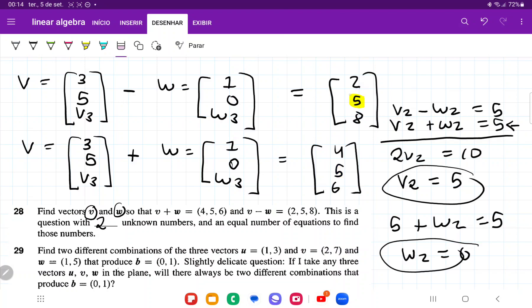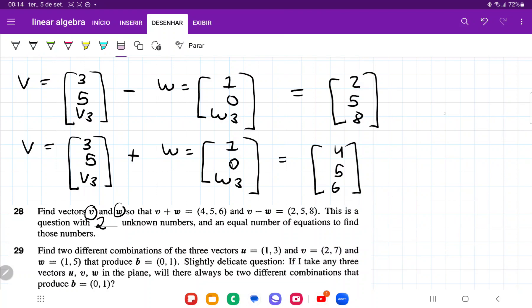We're only missing now the third element. Once more, we take v3, w3 and the third element. We have v3 minus w3 equals 8, and v3 plus w3 equals 6.